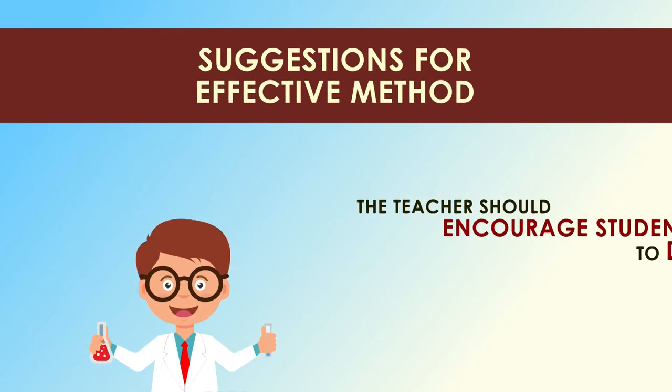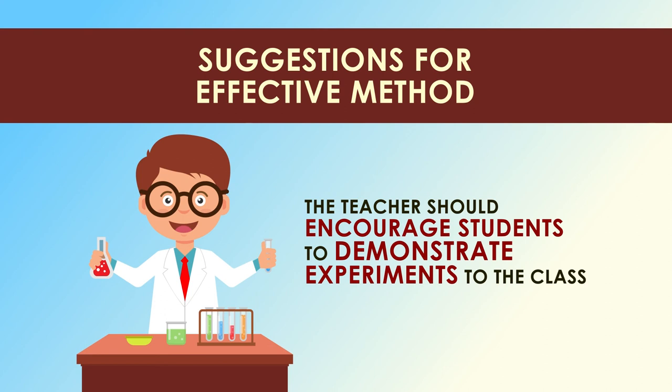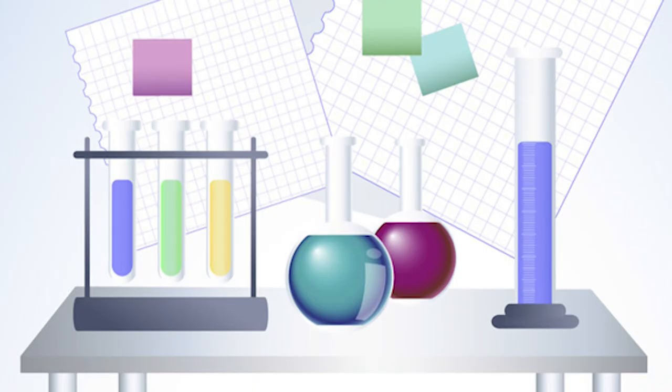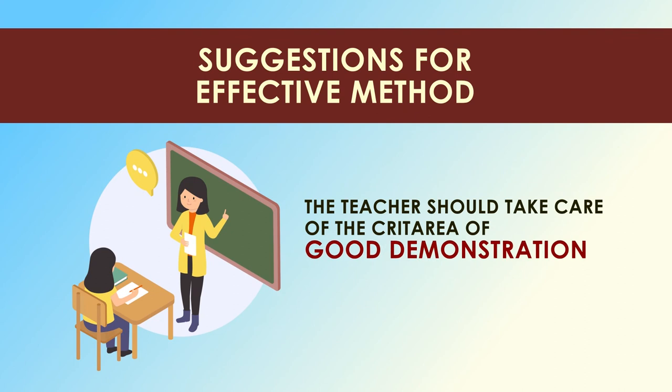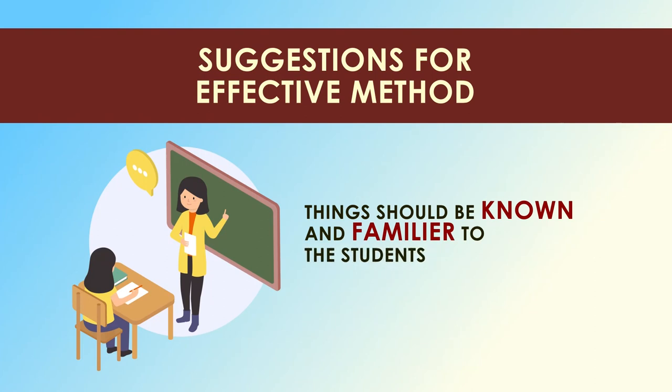To make this lecture-come-demonstration method more effective, we have certain suggestions. The teacher should encourage students to demonstrate experiments in the classroom, which can be done on a rotation basis. The demonstration table should be well-lit so that the apparatus used is properly visible. The teacher should take care of the criteria of a good demonstration. The experiment shown must conform to the standard and mental ability of the students. As far as possible, things known and familiar to the students should be used in the experiment.